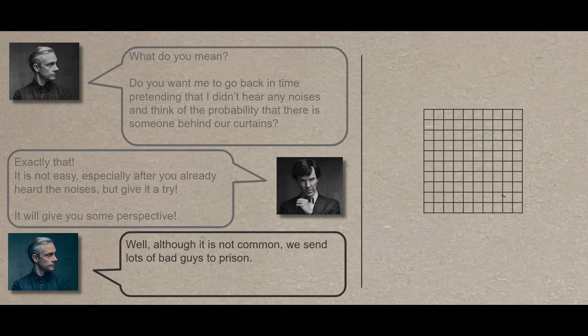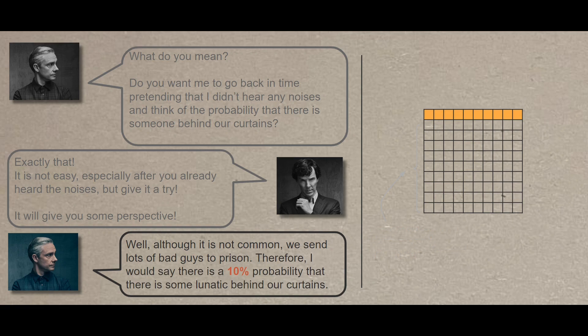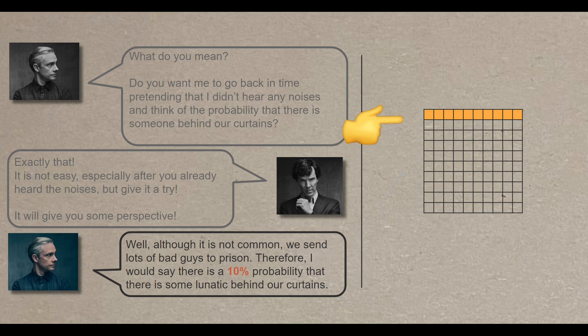Well, although it's not that common, we send lots of bad people to prison. Therefore, I would say that there is 10% probability that there is some lunatic behind our curtains. So now this 10% represents the probability that there is someone behind the curtains regardless of any noises or evidence was unnoticed.